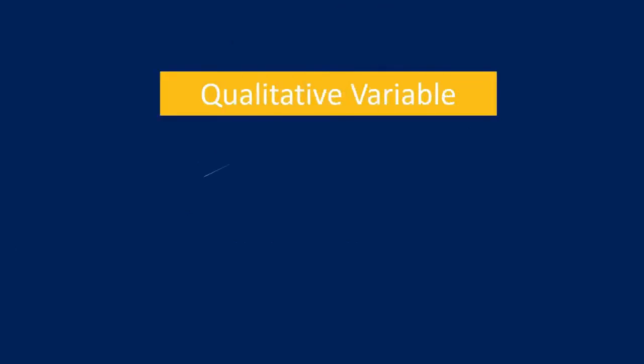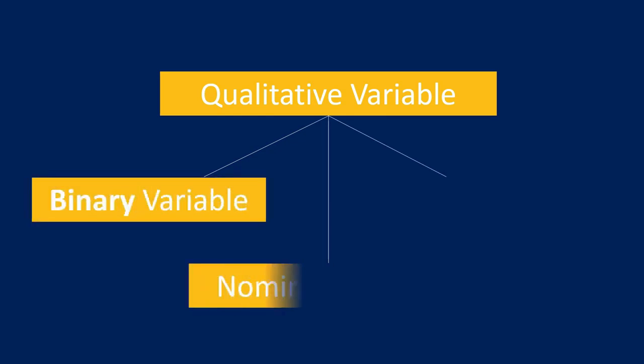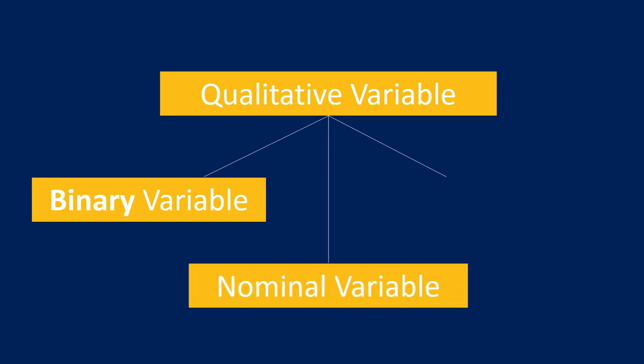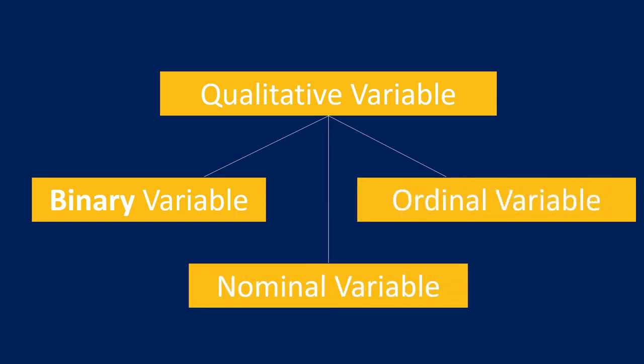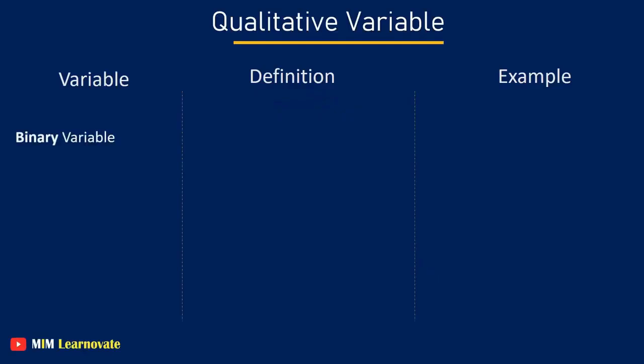Qualitative variable. There are three types of qualitative variables. Binary variable - variables with only two categories. For example, male or female, red or blue.